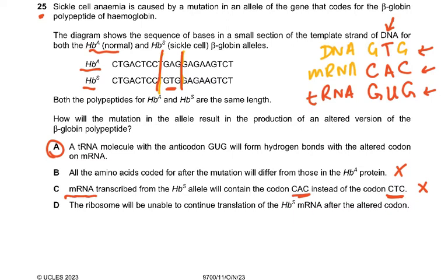The ribosome will be unable to continue transcription — now why would it stop transcription? That's why people have sickle cell anemia. It will not stop the translation. The translation will take place. That is why sickle cell anemia people are there in this world and they suffer.